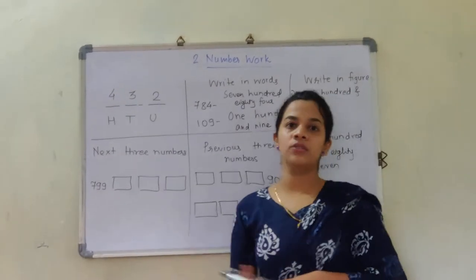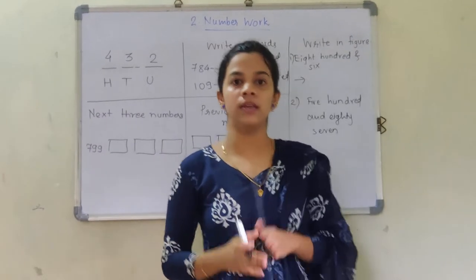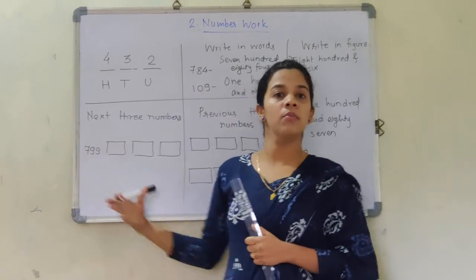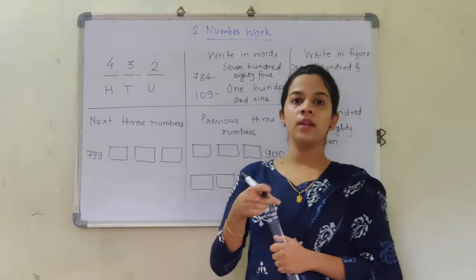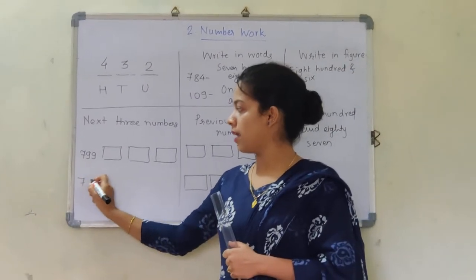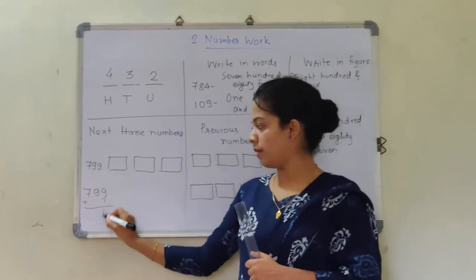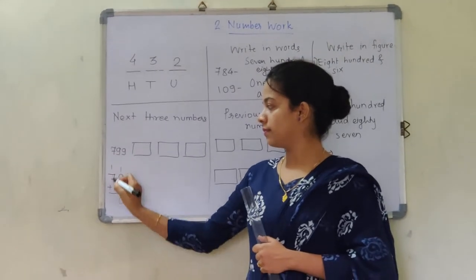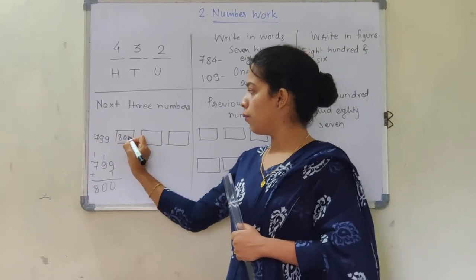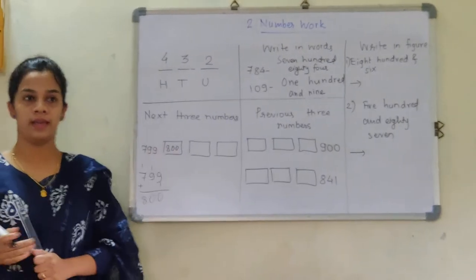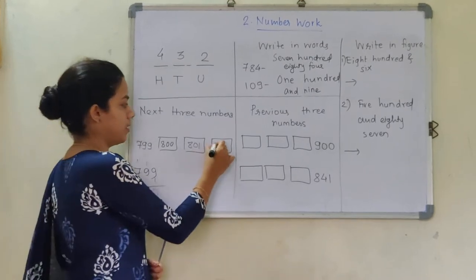You can see they have asked for the next 3 numbers. I know you studied these in earlier classes — I am just revising. Can you tell me which is the next number after 799? If you add 1 to 799, the result is 800. So the next number is 800. What is the next number after 800? It is 801. And which is the next number after that? It is 802.